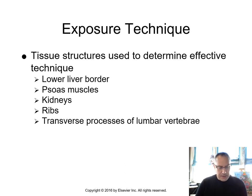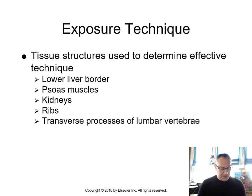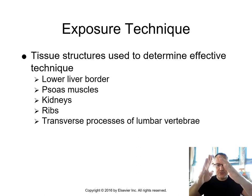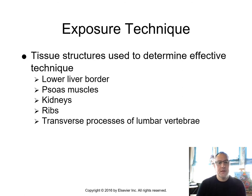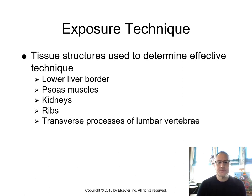Exposure technique is important because at the bottom of pages 134–135 you can see sample KUBs. You want to see the lower border of the liver, the psoas major muscles (which come down from the spine like sails), the kidney shadows, the lower floating ribs, and the transverse processes of the lumbar vertebrae. If you can see those structures, you've got a good technique.